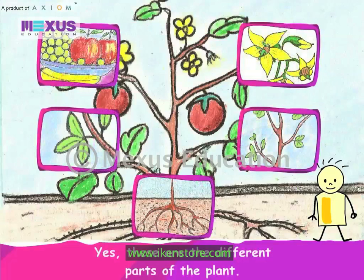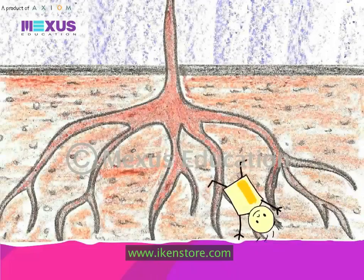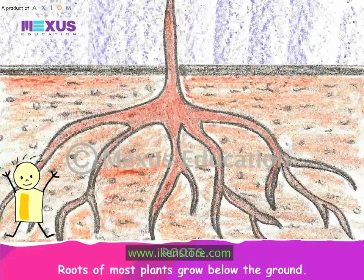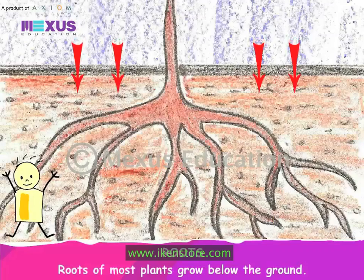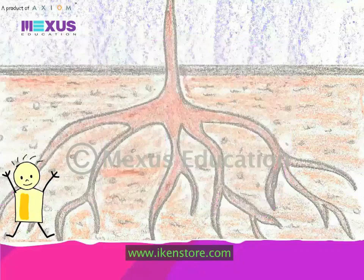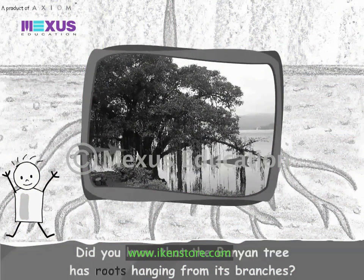These are the different parts of the plant. Roots of most plants grow below the ground. Did you know roots have tiny hair on them? Did you know that the banyan tree has roots hanging from its branches?